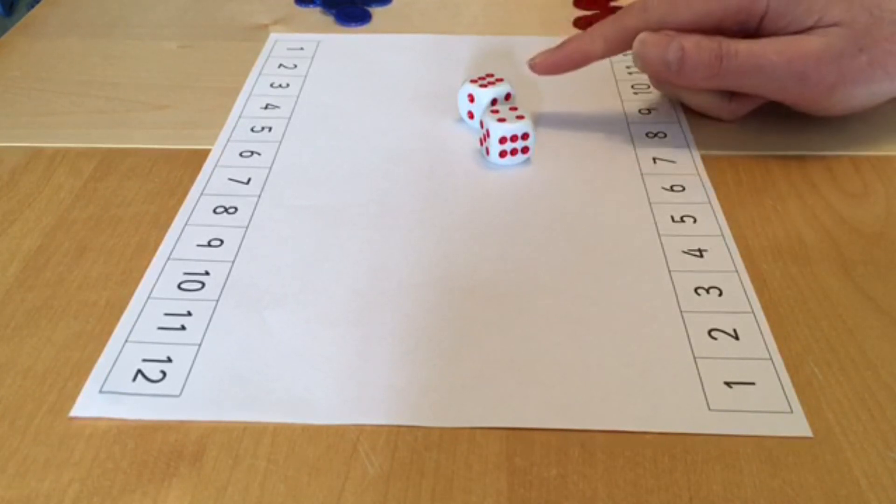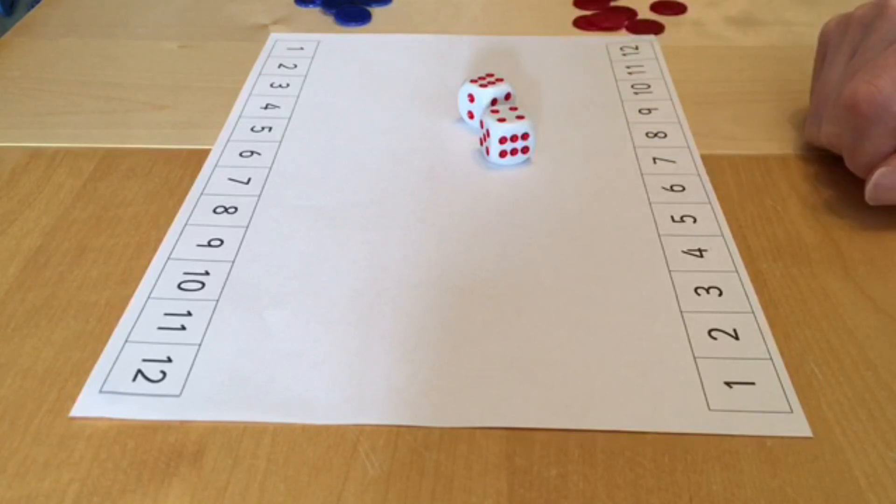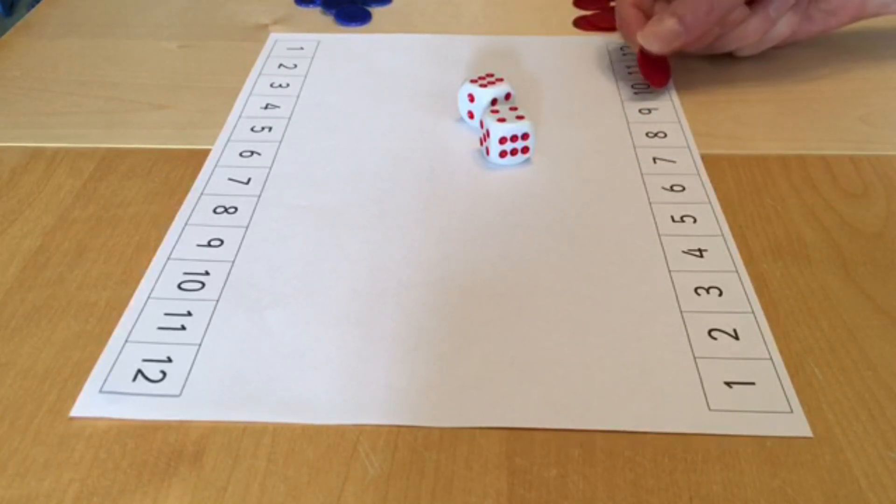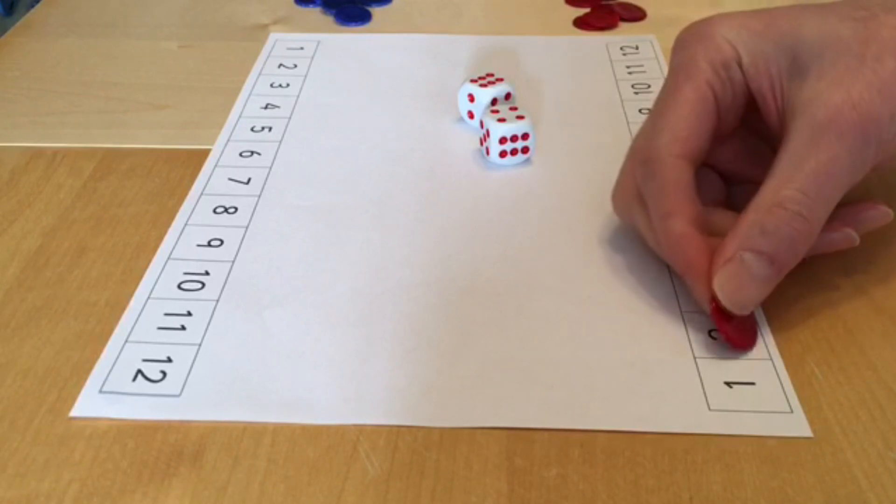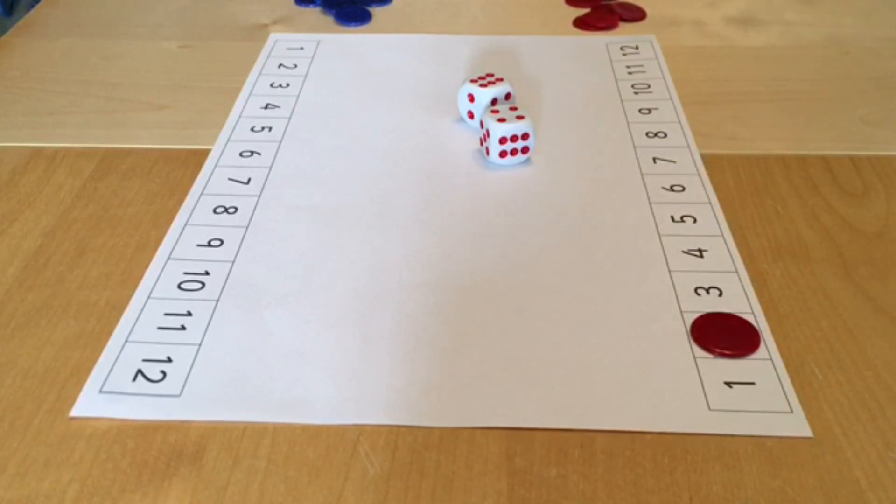They can either add the dots on the dice together—six and four makes ten—and cover that number, or they can subtract the number of dots from each other. Six take away four is two and they can cover that number. Player two then does the same and again the winner is the first person to cover all of their numbers.